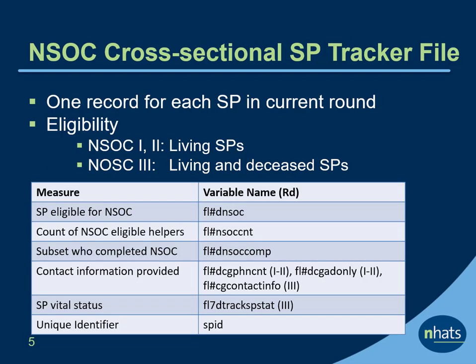The NSOC cross-sectional SP tracker file provides information about NSOC eligibility at the SP level. The file includes one record for each SP in the current round of NHATS. For NSOC 1 and 2, living SPs with NSOC eligible helpers were eligible. For NSOC 3, both living and deceased SPs with eligible helpers were eligible. The file includes SP level variables such as whether the SP is NSOC eligible, a count of NSOC eligible helpers, and a count of the subset who completed NSOC. Each record also includes a unique identifier, the SP ID.